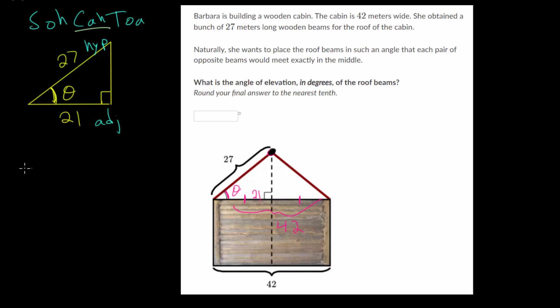So we know that cosine of our angle, in this case we called it theta, is equal to the adjacent divided by the hypotenuse. In this case, the adjacent is 21. The hypotenuse is 27. So this question comes down to finding this missing angle.